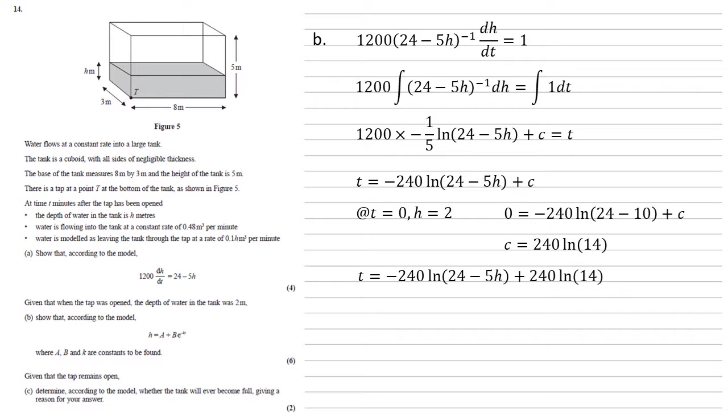We've got 240 as coefficients of both of them. So let's factorise that out. We get 240 ln 14 minus ln 24 minus 5h. By the rules of logarithms, if we've got two logs subtracting, we can bring them together as a division inside the ln. So this is 240 ln 14 over 24 minus 5h.